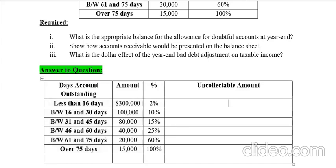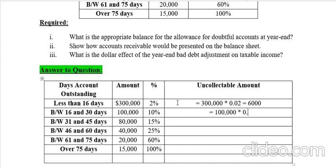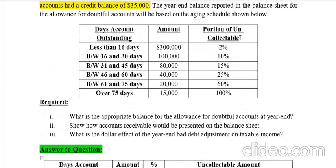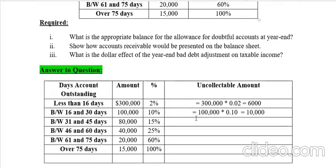Let's multiply: 2% times $300,000 equals $6,000. Then 10% times $100,000 equals $10,000. After that, $80,000 times 15% — the uncollectable portion given in the table — equals $12,000.